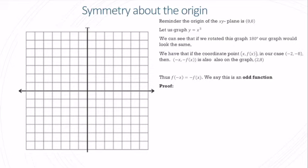When something has symmetry about the origin, that's what we call an odd function. Let's graph y equals x cubed. When x is 0, y is 0; when x is 1, y is 1; when x is 2, y is 8; when x is negative 1, y is negative 1; when x is negative 2, y is negative 8. The domain of y equals x cubed is all real numbers and its range is all real numbers.